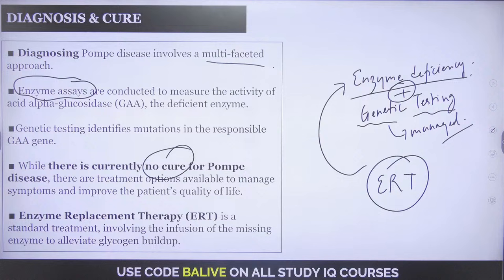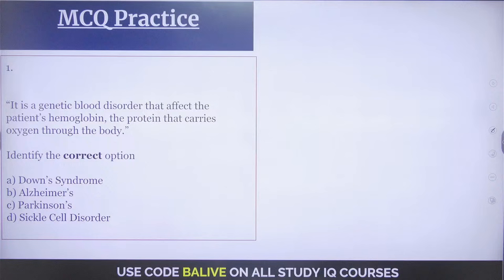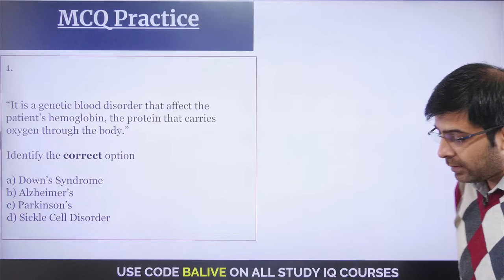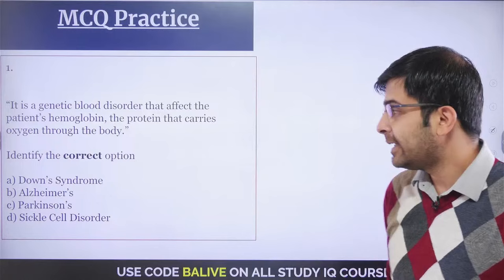This is the Pompe disease context — the first unfortunate demise of a patient in India, a 24-year-old who valiantly battled the disease. Quick question: a genetic blood disorder that affects the patient's hemoglobin — the protein that carries oxygen throughout the body — which disease is this? Is it Down syndrome, Alzheimer's, Parkinson's, or sickle cell disorder? Let me know in the comment box.